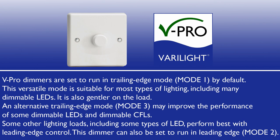This is mode 1. An alternative trailing edge mode may improve the performance of some dimmable LEDs and dimmable CFLs — this is mode 3. Some other lighting loads, including some types of LED, perform best with leading edge control. This dimmer can also be set to run in leading edge mode — this is mode 2.